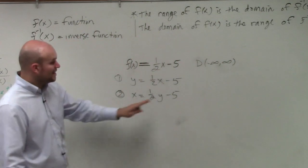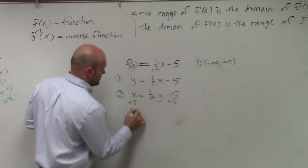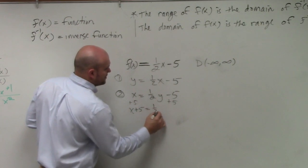Solve for y, so now we're just going to solve for y. We need to isolate the variable. So add 5 to both sides.